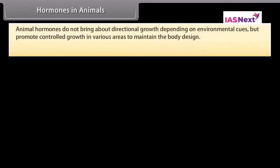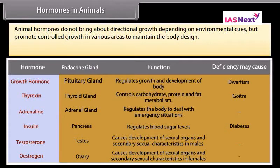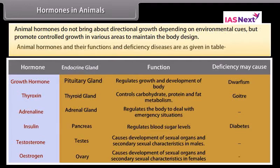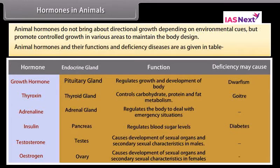Animal hormones do not bring about directional growth depending on environmental cues, but promote controlled growth in various areas to maintain the body design. Animal hormones and their functions and deficiency diseases are as given in the table.